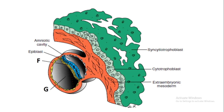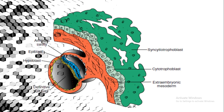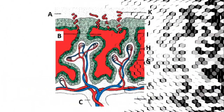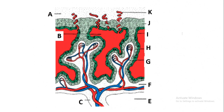Below the epiblast you need to expect the hypoblast, and then under the hypoblast there is a cavity which is known as the definitive yolk sac. Let's quickly look at the next diagram.